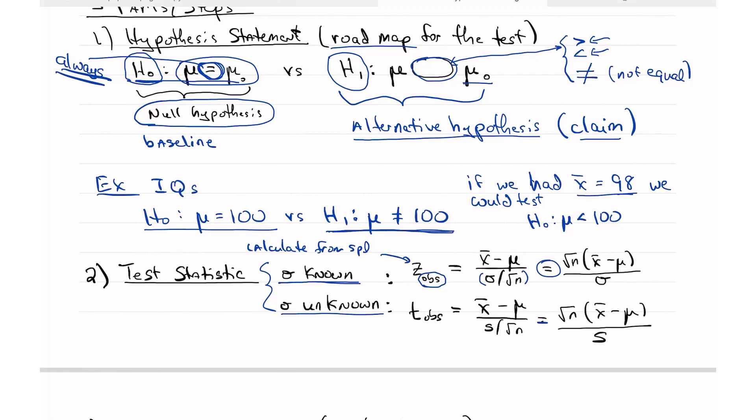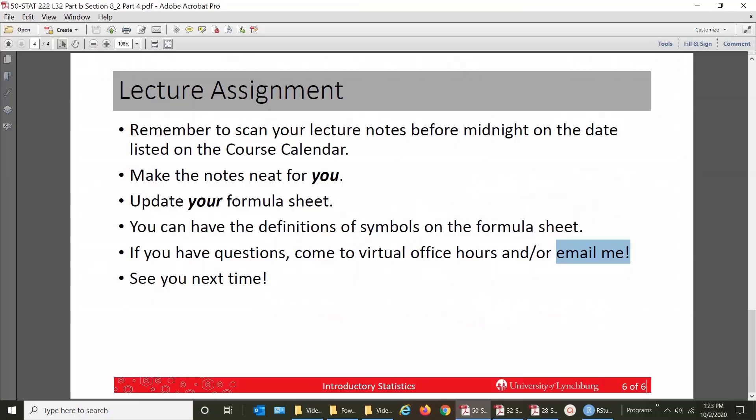And for t observed, so in z observed, we have sigma. So if we know sigma, we can use z. If we only know s, we have to use t. And everything's the same between these two formulas except for the sigma and the s. That's the only difference.